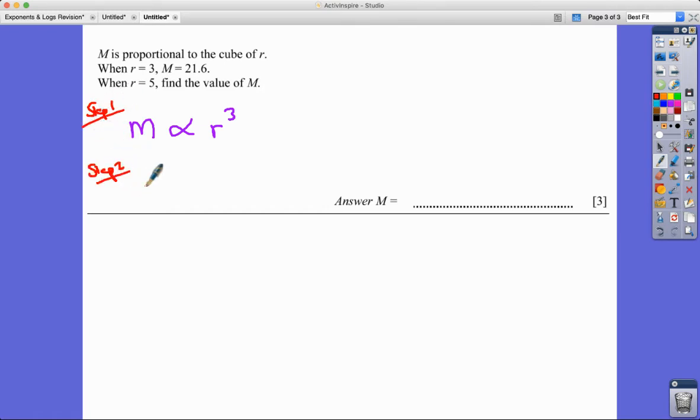Step two, remember, is that the proportionality sign is replaced by equals K. This is what I tell my class. So what I write then is that M, I replace that by equals K, equals K R cubed. That's called the constant of proportionality.